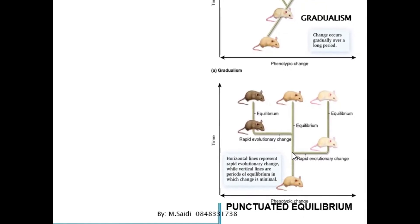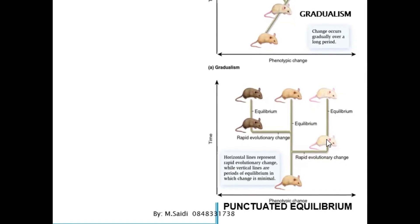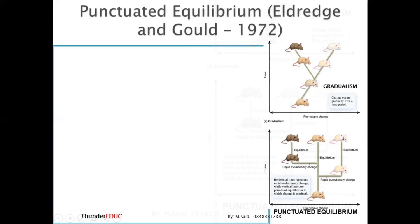In punctuated equilibrium, the organism changes rapidly within a short period of time, and then remains like that for a long period of time. When it reached another point, it changed color just within a short period of time. Compare that with gradualism, where changing from this color to this color took a long period of time — and also took a long period of time to change again. So comparing the two, this route shows just a very short period of time for change, while the other took a long period of time.